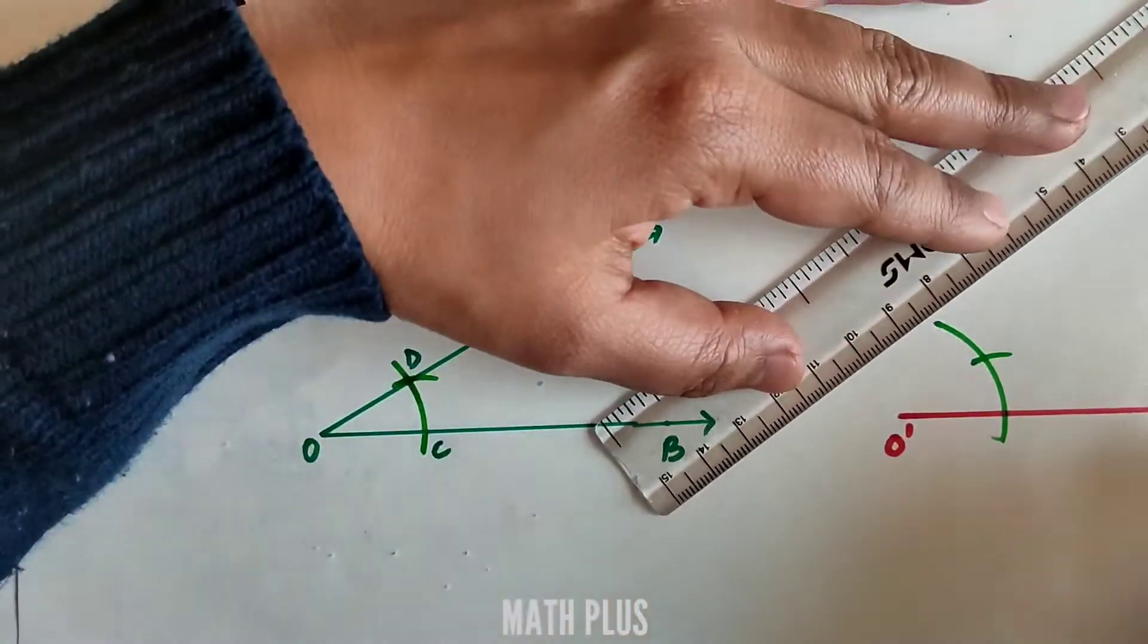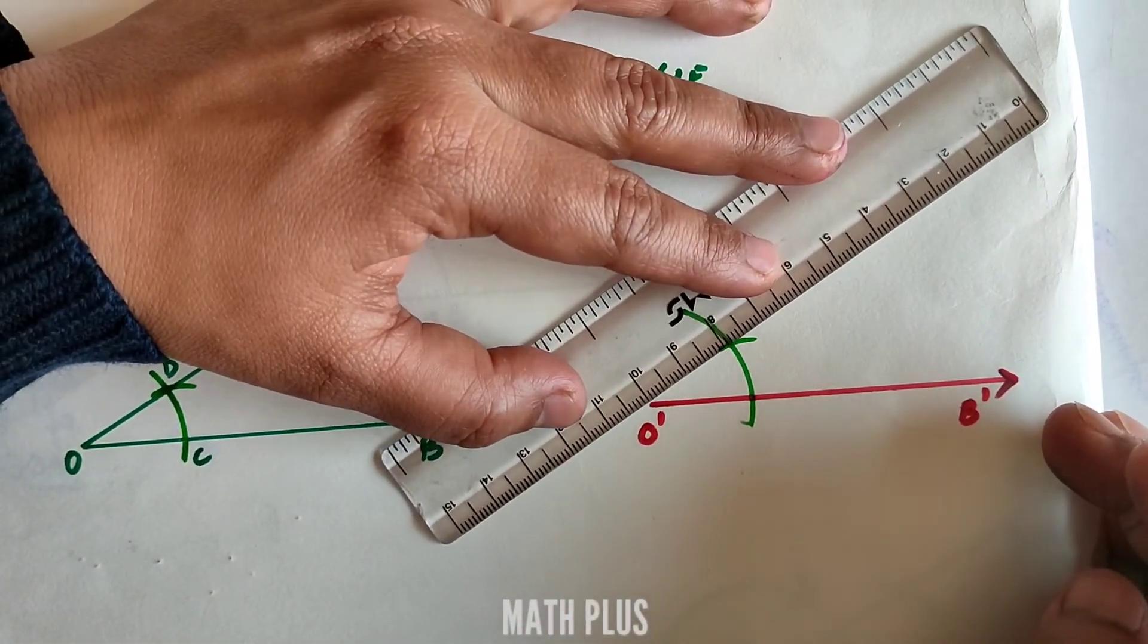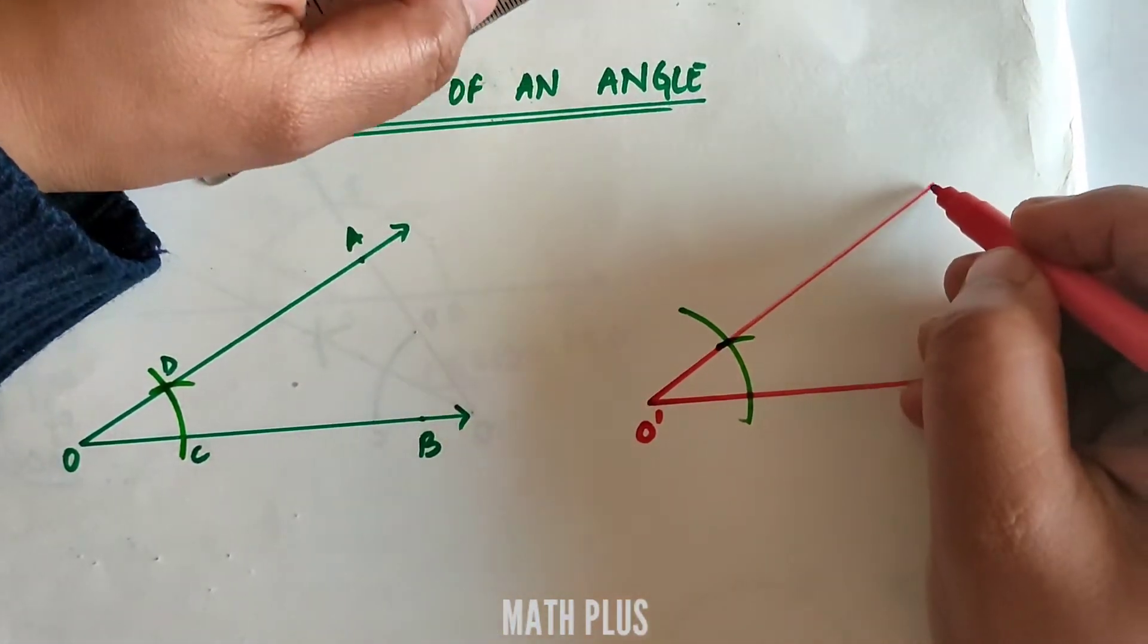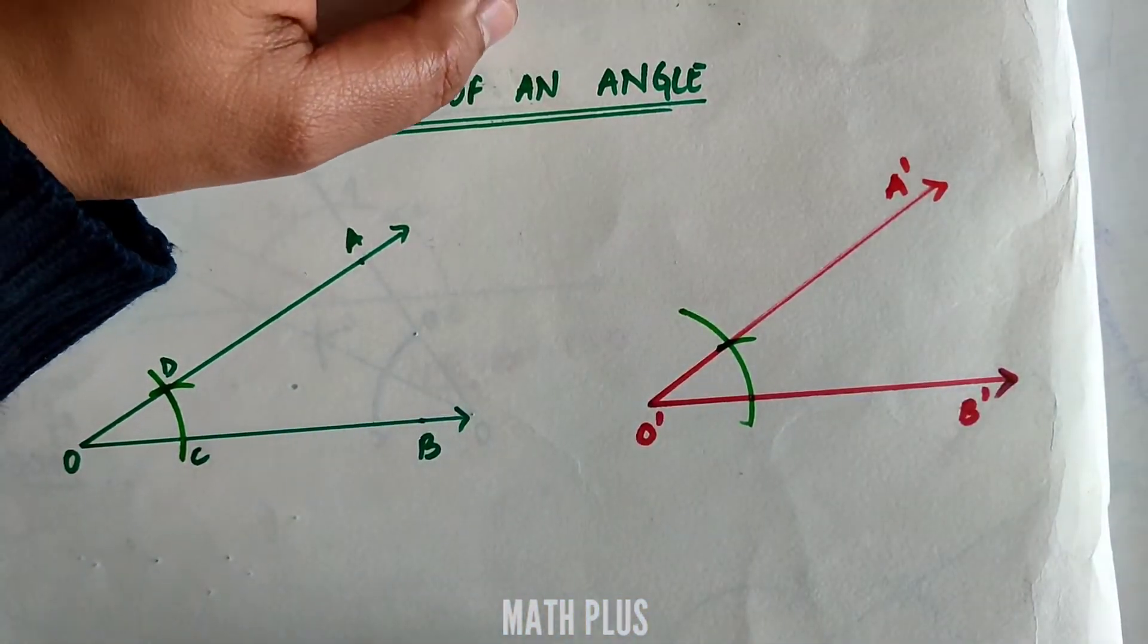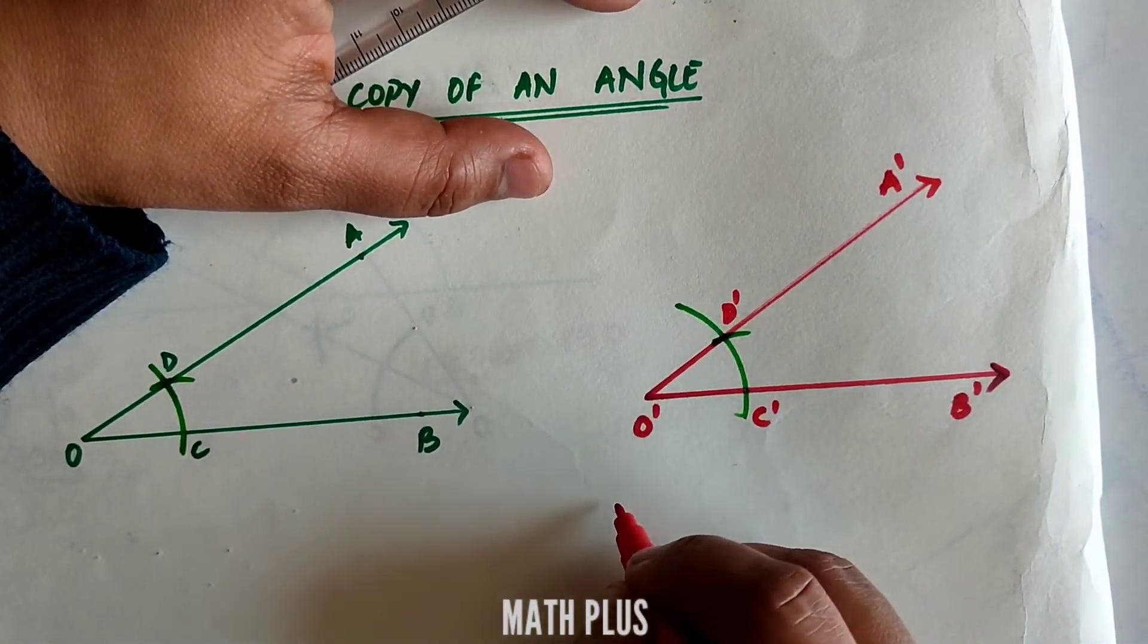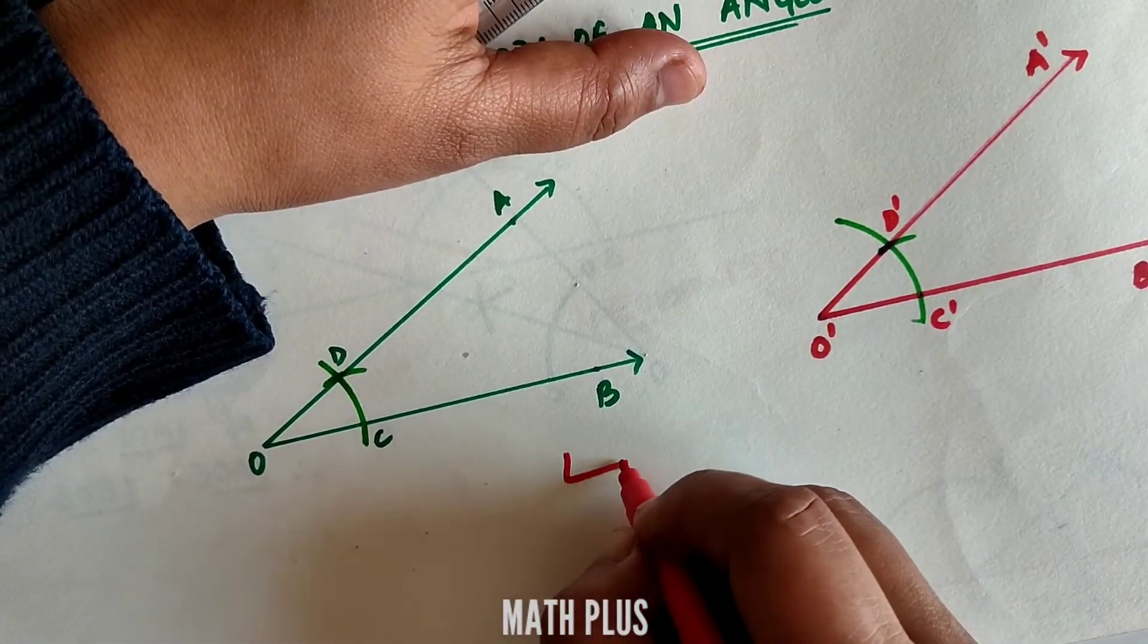Now join the two points O' and the intersected arc. Name it as A' and we get the angle as A'O'B', which is a copy of AOB angle.